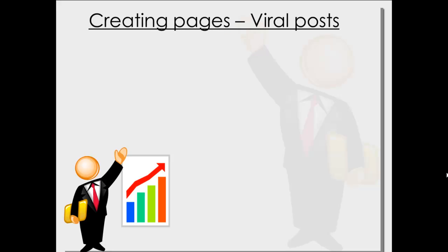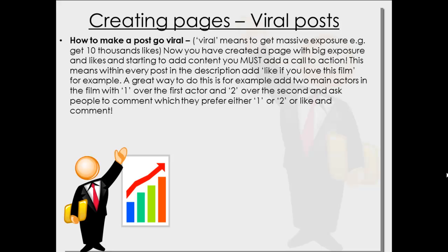So how to make your posts go viral? Viral means to get massive exposure — for example, 10,000 likes. The definition of viral varies; some people say it's a million, some say a thousand. It doesn't really matter. Now you've created a page with big exposure and likes and you're starting to add content, but you must add a call to action to every post.